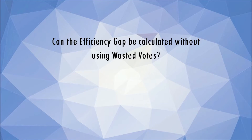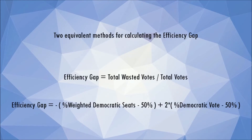The examples are designs that even someone who has just started using Excel can set up their own spreadsheet. To answer the lingering question on everyone's mind, yes there is a second way of calculating the efficiency gap and it makes the process simpler. Here are the two methods: the first uses wasted votes and the second uses a seats-votes equation.